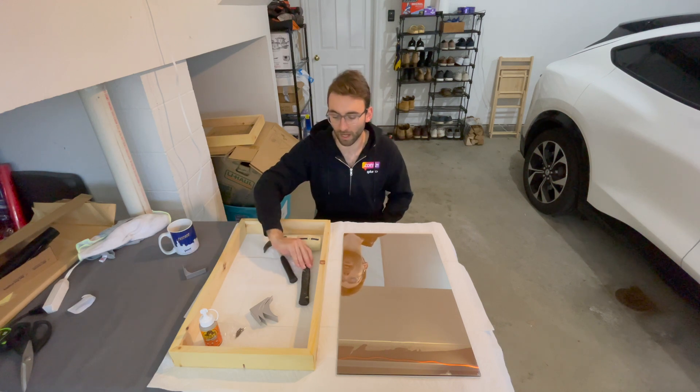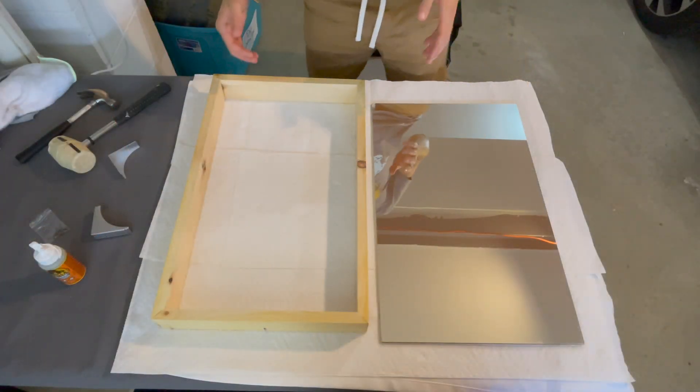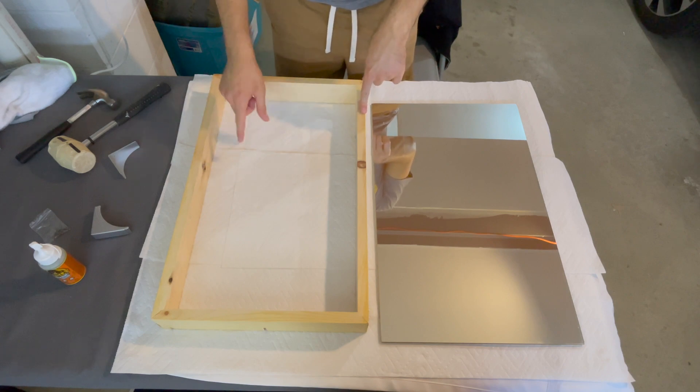And then you're also going to need either a rubber mallet or a small hammer. Before we start applying any glue, you're going to want to make sure that you are gluing this to the correct side of the frame.